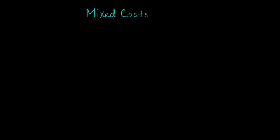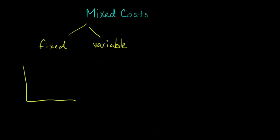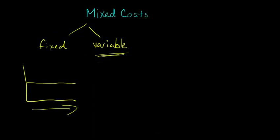In this video, we're going to talk about the concept of mixed costs. We've discussed previously fixed costs and variable costs, and how these costs behave when there are changes in the activity level — like when we produce more units. With fixed costs, the cost remains constant regardless of how many units we produce, whether 1,000 or 500. With variable costs, they increase as we produce more units; as the activity level changes, the cost goes up.